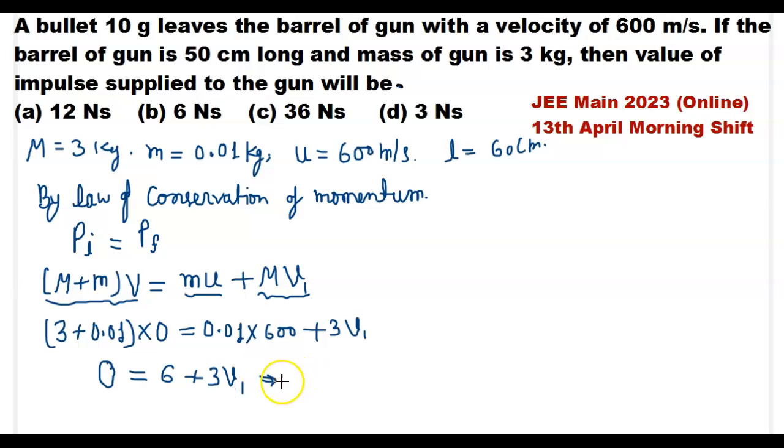From this we can calculate the recoil speed of the gun will be minus 6 divided by 3, that means minus 2 meter per second.